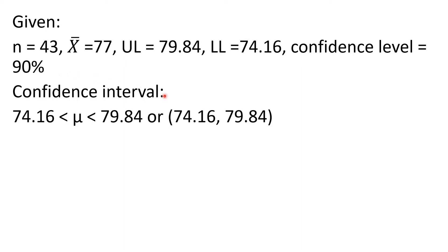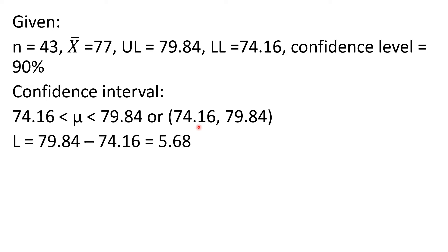First, let us solve for the value of the confidence interval. The confidence interval is between the lower limit and the upper limit. So in this problem, the confidence interval is greater than the lower limit, 74.16, but less than the upper limit, 79.84, or simply from 74.16 to 79.84 exclusively. For the length, it is the upper limit minus the lower limit: 79.84 minus 74.16, so the length is 5.68.